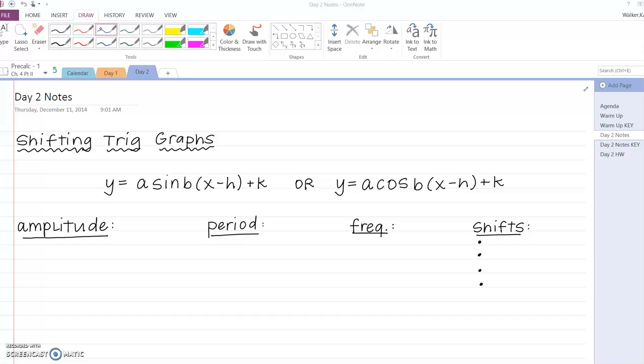So moving on to day two, we're taking things up a notch. We're still focused on changing the parent functions of sine and cosine by changing the amplitude and period, but we're also going to be shifting things. That means I can shift things to the left or the right, and I can shift things up and down.